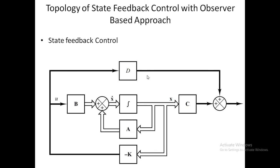In the state feedback control block diagram, the D matrix is also present. The input u goes to all three terms: Du, and the K state feedback term. This represents x-dot equals Ax plus Bu; the integration of x-dot gives x, and the output y equals Cx plus Du.